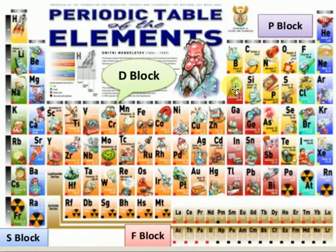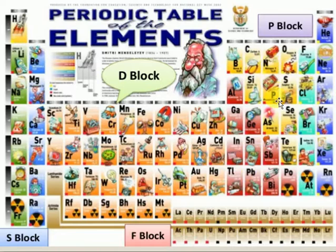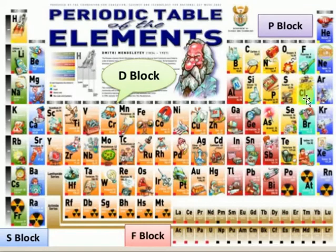The P-block elements include: Boron, Aluminium, Gallium, Indium, Thallium. Carbon, Silicon, Germanium, Tin, Lead. Nitrogen, Phosphorus, Arsenic, Antimony, Bismuth. Oxygen, Sulphur, Selenium, Tellurium, Bohrium. Fluorine, Chlorine, Bromine, Iodine, Astatine. Helium, Neon, Argon, Krypton, Xenon, Radon.